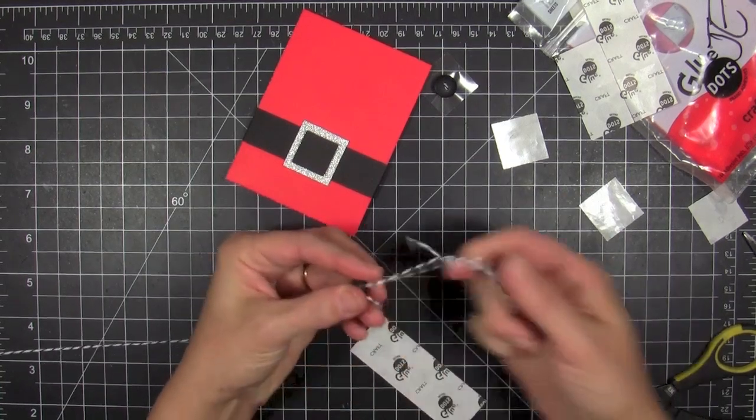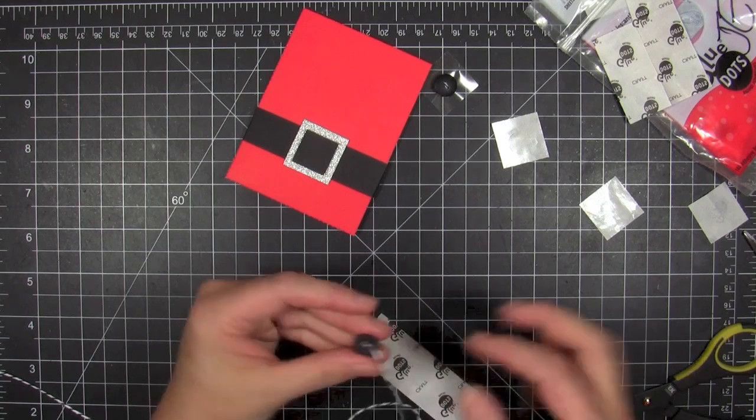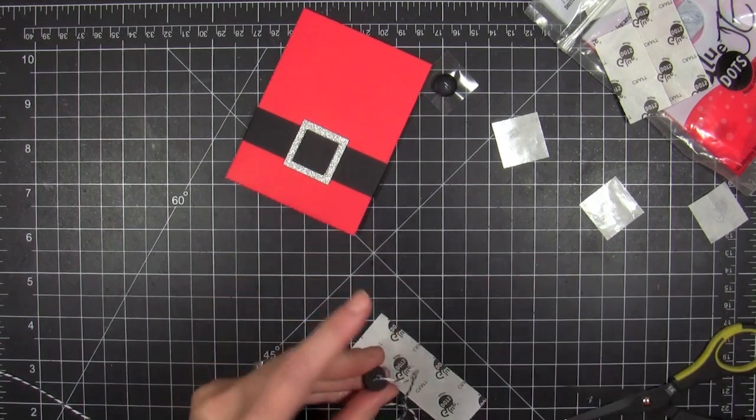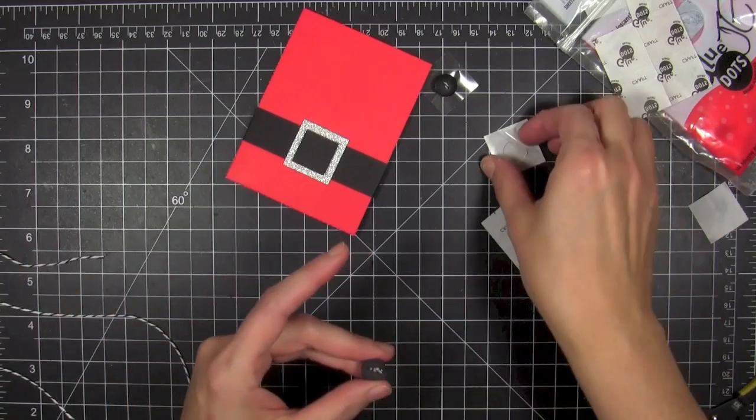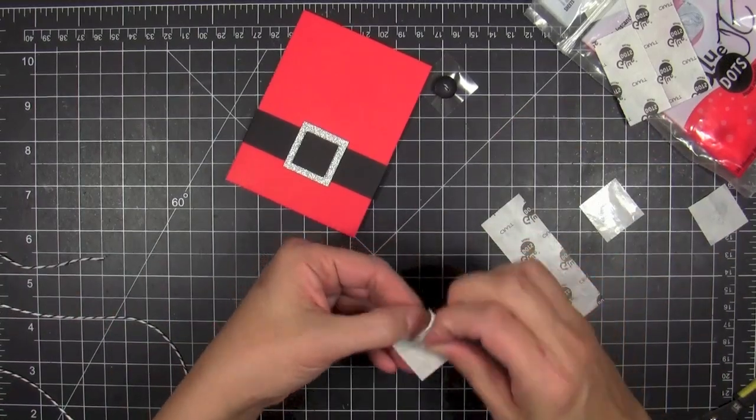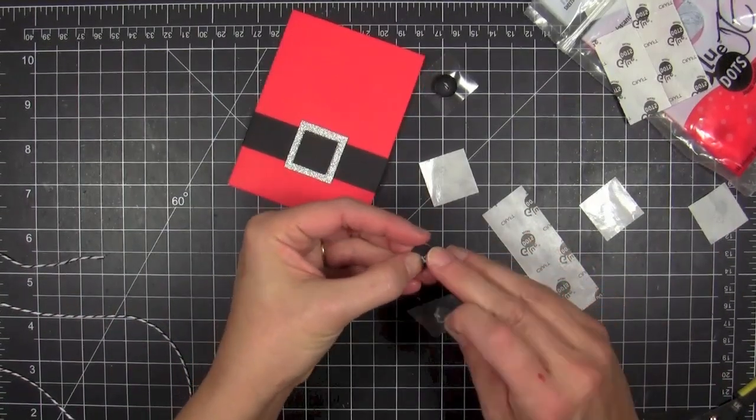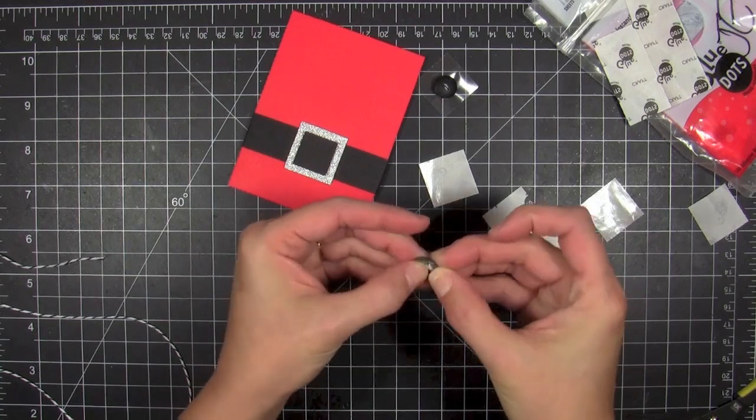And then I thought it would be fun to add some buttons, so I'm just gonna thread some black and white baker's twine through my buttonholes. I use a dental floss threader to do that because I can't get it through those little holes to save my life. I'm not even gonna tie it into a knot or a bow.